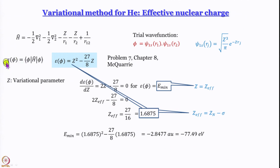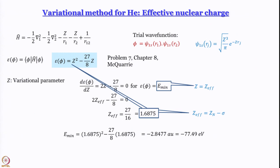Using this, we define the functional epsilon as the integral of phi* H-hat phi over all space. We used the atomic number Z as a variational parameter, and we did that consciously because we know that the atomic number seen by an electron in the presence of the other is less than the full value. That is why we expect the value of Z to keep decreasing — one way is taking Z minus sigma, the other way is taking a fraction, and from that we can get the shielding constant.